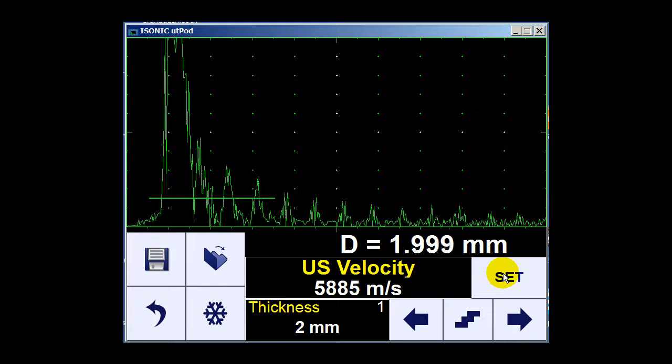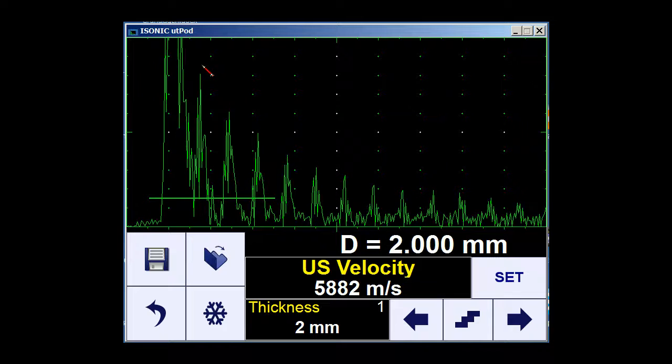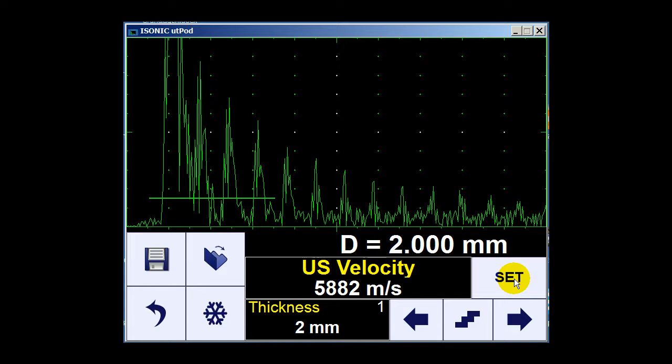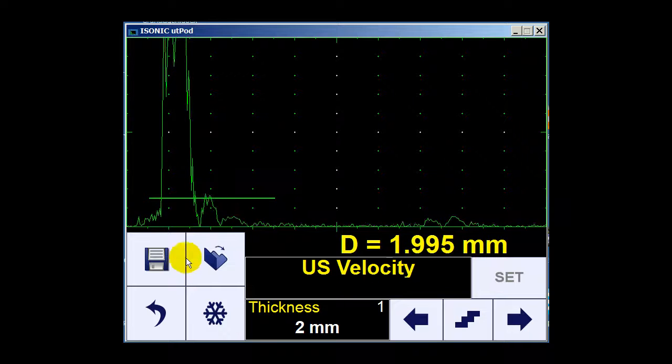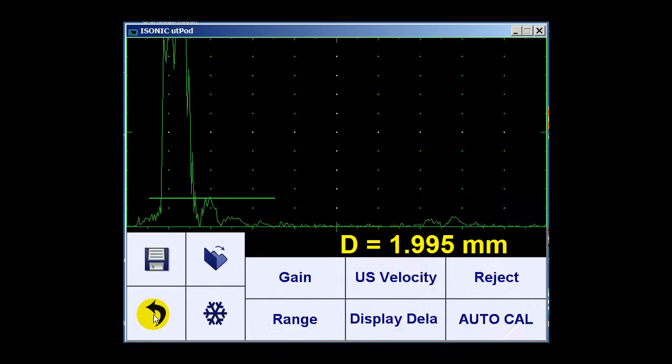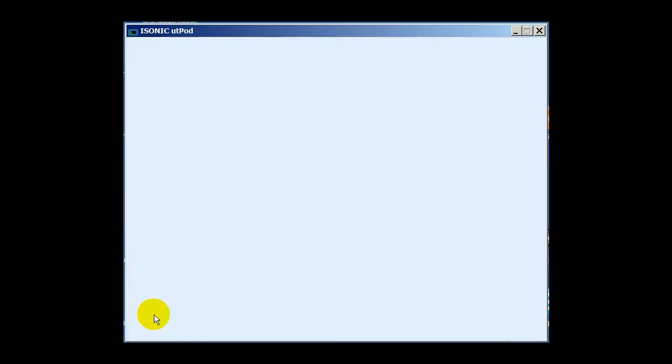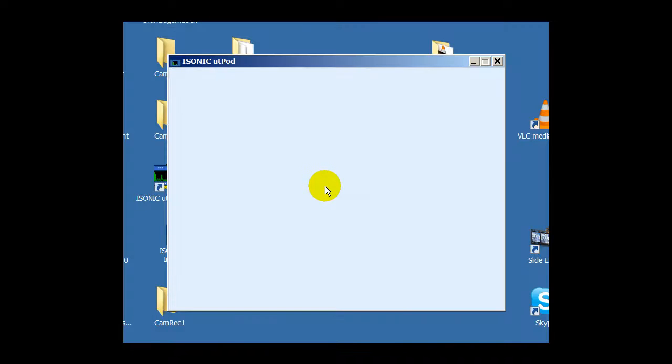And then if it is all properly set, the echo is between 80 to 100%, I just press the set button. Now the system is set for measurement on this material. So I can go back and go to the measurement mode and I will perform my measurements.